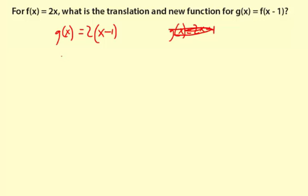And you could simplify this if you wanted to. You could say g of x equals 2x minus 2 by distributing. It doesn't really help in this situation, because it really clouds the issue of the transformations, but these functions are equivalent.